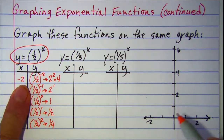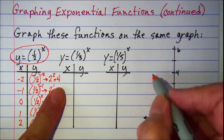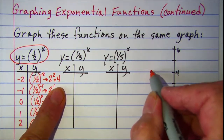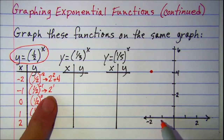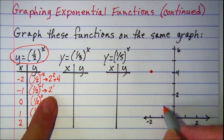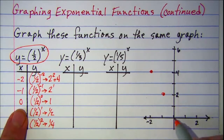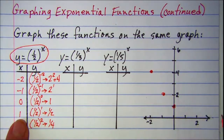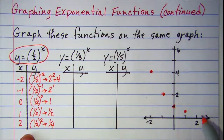When x is negative 2, y is 4. When x is negative 1, y is 2. When x is 0, y is 1. When x is 1, y is one half. And when x is 2, y is one fourth.